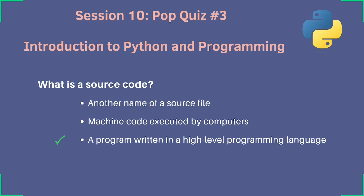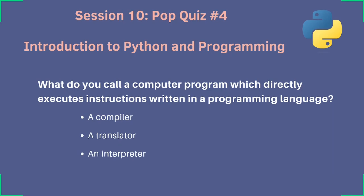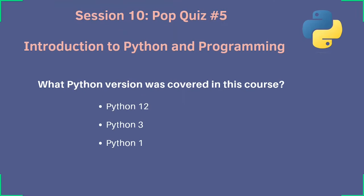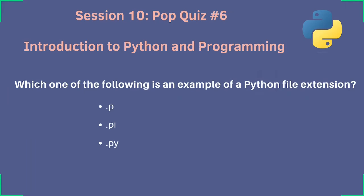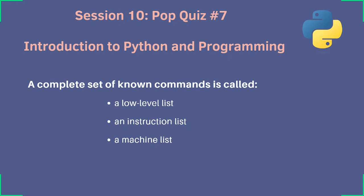What do you call a computer program that directly executes instructions written in a programming language? Interpreter. What Python version was covered in this course? Python 3. Which of the following is an example of a Python file extension? When you create a Python file, what extension would the filename have? The answer is .py. A complete set of known commands is called what — low-level list, instruction list, or machine list?